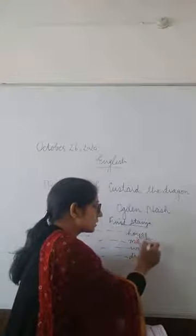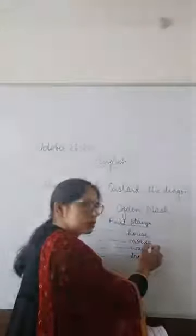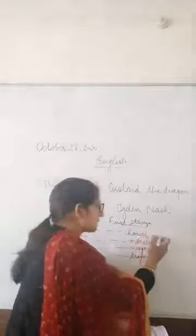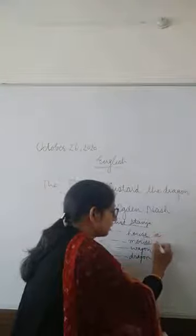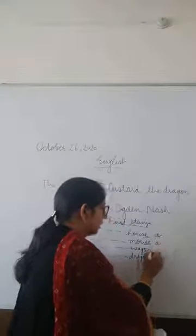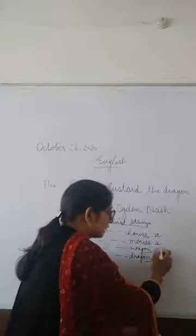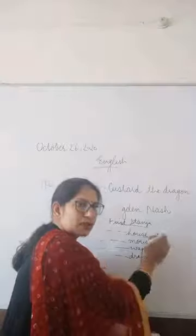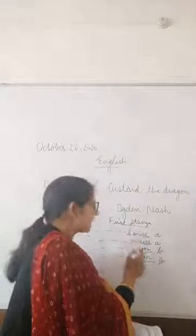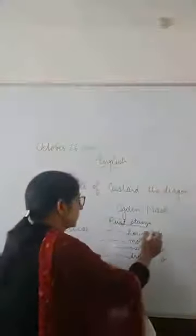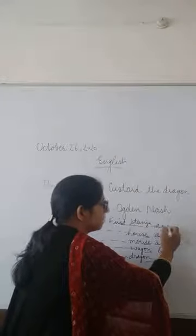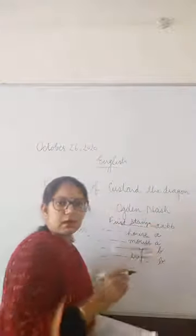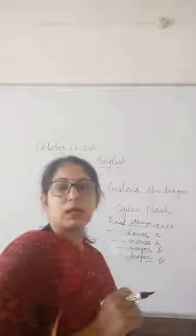So here the last words are house and mouse — ending in the same rhyme. We name them A, A. Then wagon, dragon — we name them B, B. So the rhyme scheme of the first stanza is A, A, B, B. Rhyme scheme is found out in this way.